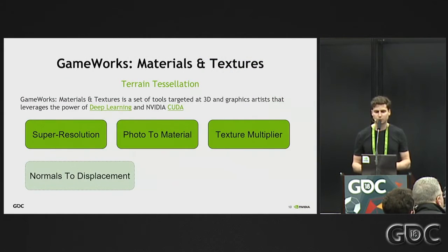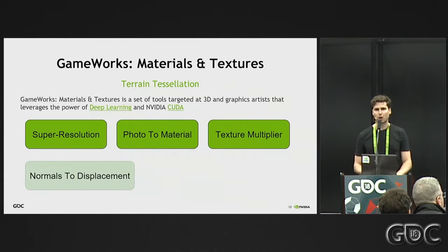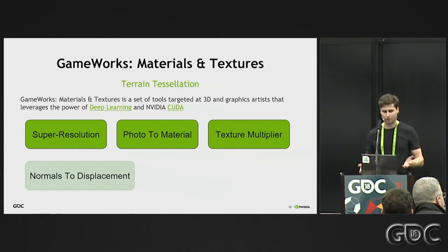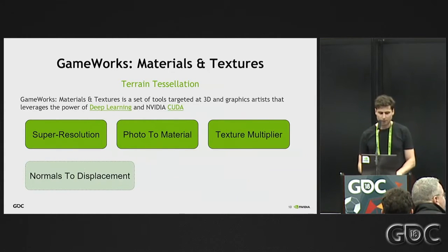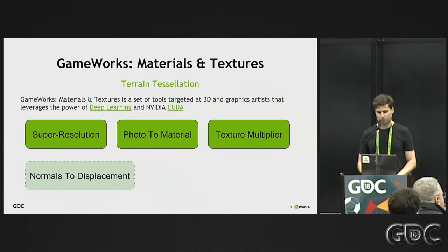We have a set of tools for materials and textures within our GameWorks suite. Currently these include super resolution, photo to material, and texture multiplier. We are likely to add one more tool soon, which is the exact normal-to-displacement conversion we're talking about. This should be good news to everyone interested in how to obtain good-looking displacement maps from normal maps.